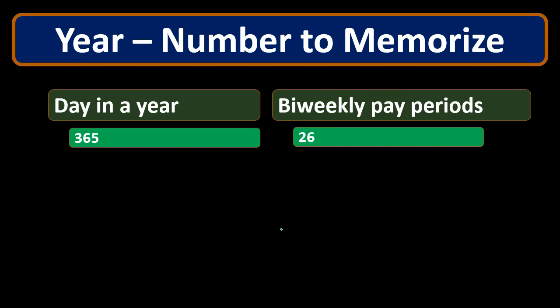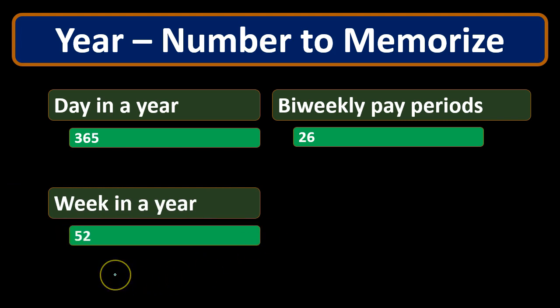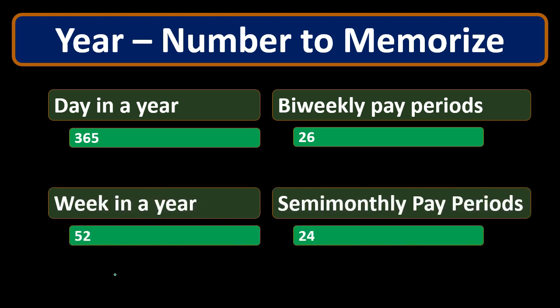Biweekly pay periods: 26 — derived from 52 divided by 2. Weeks in a year: 52 — worth memorizing. Semi-monthly pay periods: 24 — derived from 12 months times 2. So to recap: biweekly is 52 weeks divided by 2, giving 26 pay periods; semi-monthly is 12 months times 2, giving 24 pay periods. 26 versus 24 — not the same.